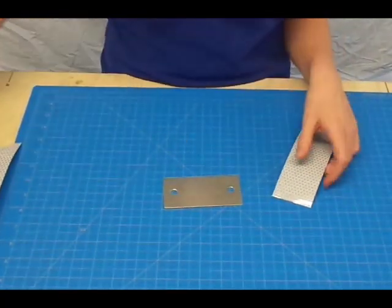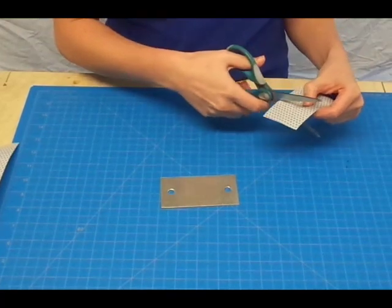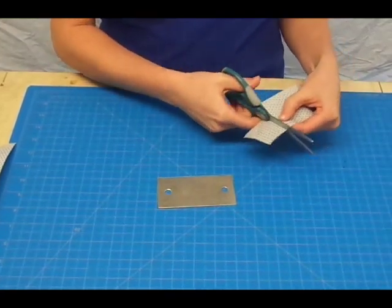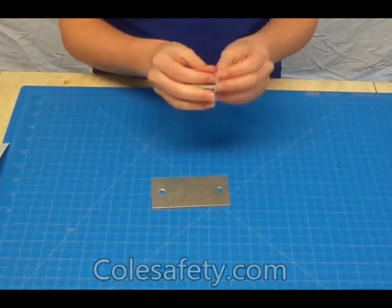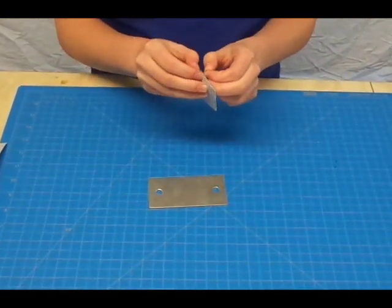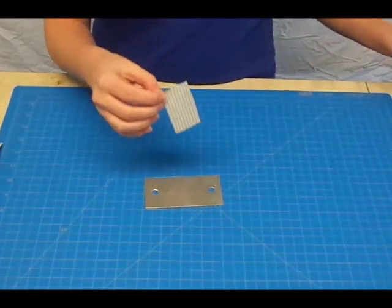Here's my smooth, clean surface. I'm just gonna cut a sample piece off right now. Peeling the back off. It's very sticky.